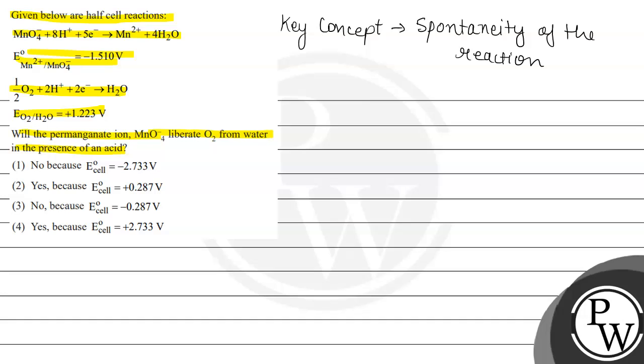Spontaneous reactions are those which actually favor the formation of the product at the conditions of the reaction occurring. And agar humare paas electrode potential ki jo value hai, potential ki value positive aati hai, then the reaction is spontaneous. Which means jo humare paas standard electrode potential ki value hai, standard electrode potential.